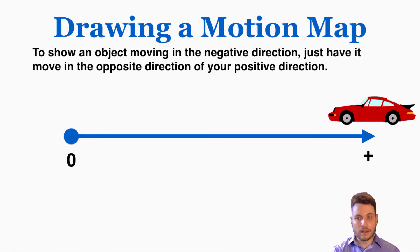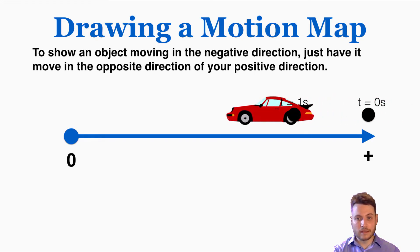To show an object moving in the negative direction, we just have it move in the opposite direction of your positive direction. So this is an example of the car moving in the negative direction.